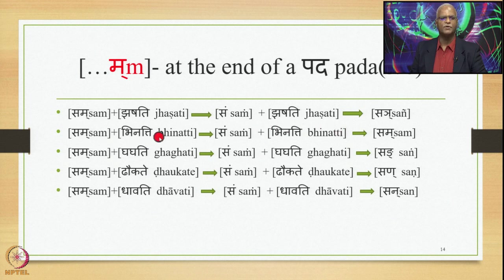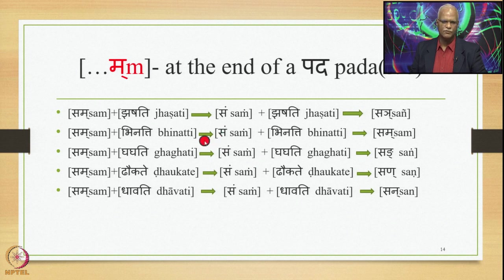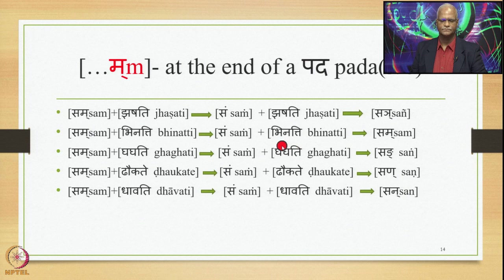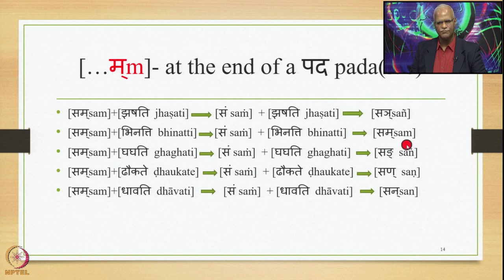Sam plus Bhinati: Ma at the end of a pada is substituted by Anuswara by 8.3.23, giving Sam Bhinati. Then 8.4.59 applies and substitutes this Anuswara by the nasal Parasavarana of Bha, which is Ma, giving Sam-Ma-Bhinati optionally. The other optional output is Sam-Anuswara-Bhinati.